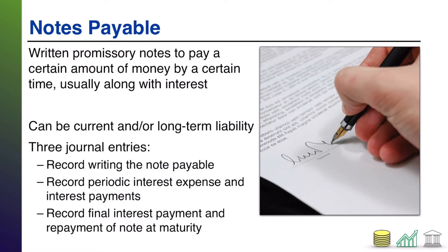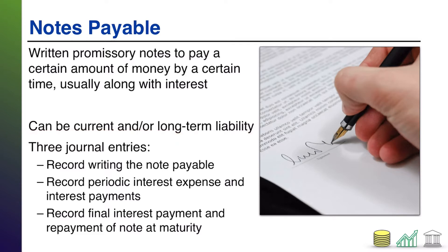That written agreement is the promissory note — the thing you sign that says you agree to pay XYZ dollars on a certain day, accompanied by a specified amount of interest. As mentioned, these could be current or long-term liabilities, or some combination of both. You could have part of the note due within a year and another part due later, so you've got to be really careful about how you classify notes payable on your balance sheet.